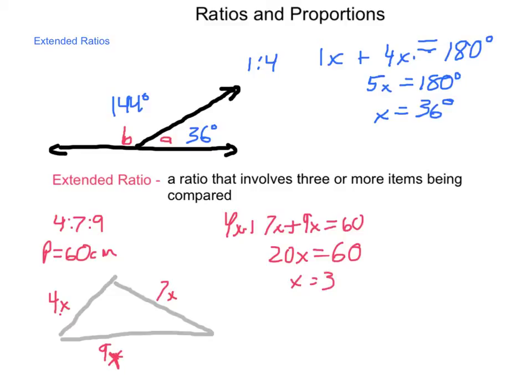So, if x equals 3, going through and replacing our values, 4 times 3 is 12 centimeters, 7 times 3 is 21 centimeters, and 9 times 3 is 27 centimeters. So, our extended ratios allow us to do more comparisons. And, we could even project this out to quadrilaterals, pentagons, or other shapes. As long as we have that common unit, in this case centimeters, that everything is being compared to.